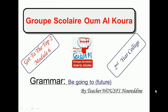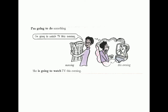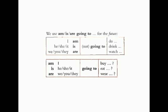Good afternoon everybody. Today's lesson is about 'be going to' future. What is 'be going to'? Here is an example: I am going to do something. For example, I am going to watch TV this evening. She's going to watch TV this evening. This is something we intend to do — a plan or program that we are going to do.